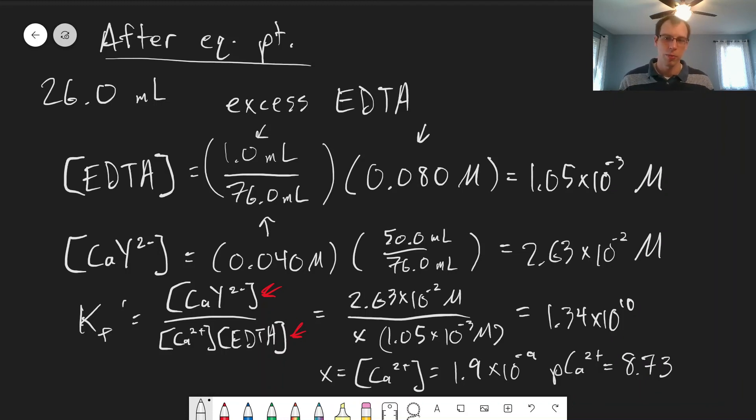In the next video, we're going to talk about a couple of final things with EDTA titrations: how do we observe the endpoint, and what do we do about high pH values with metal ions that can lead to precipitation of these metal ions with hydroxide - what is done to prevent that.